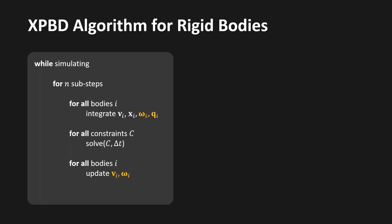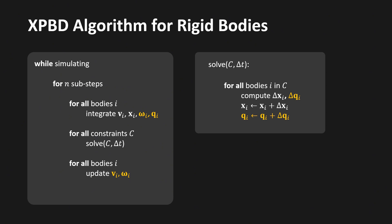Now let us have a look at how we can extend position-based dynamics to handle rigid bodies. In addition to handling the linear quantities x and v, we must now also handle the rotational quantities omega and q — we need to integrate them in time and update them after solving the constraints. A constraint can affect both position and orientation of the body; therefore we compute updates delta x and delta q for each constraint, then apply them to the position x and orientation q.